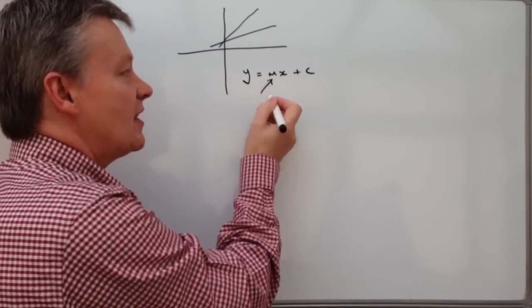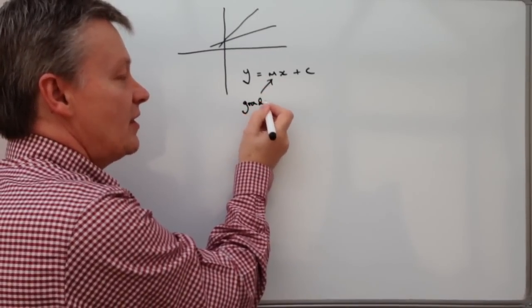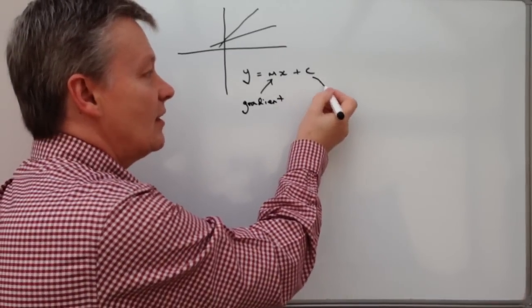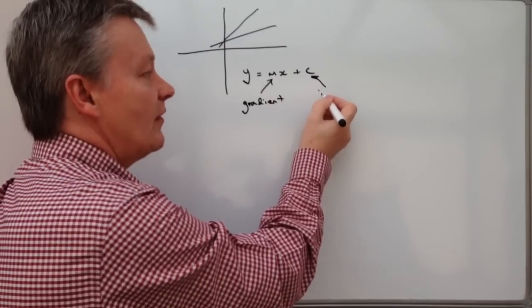The first thing is, this m means gradient. So this is the bit that we're going to be looking at today.